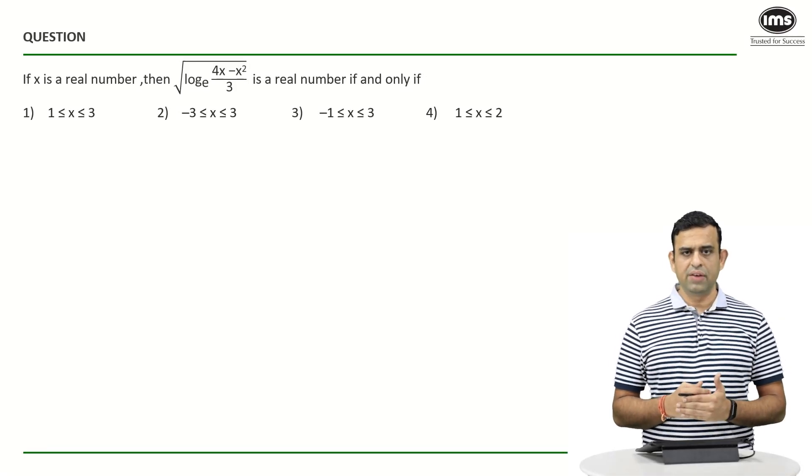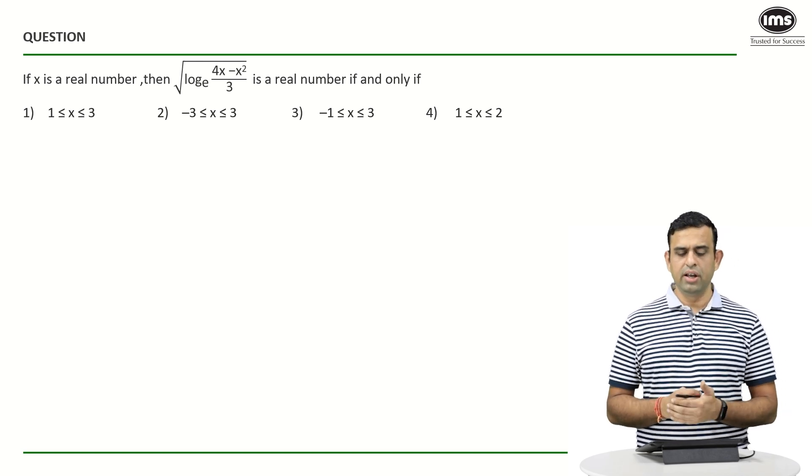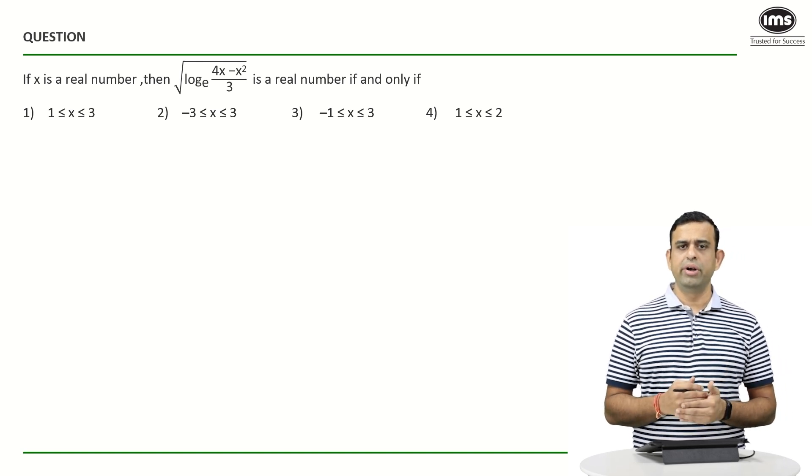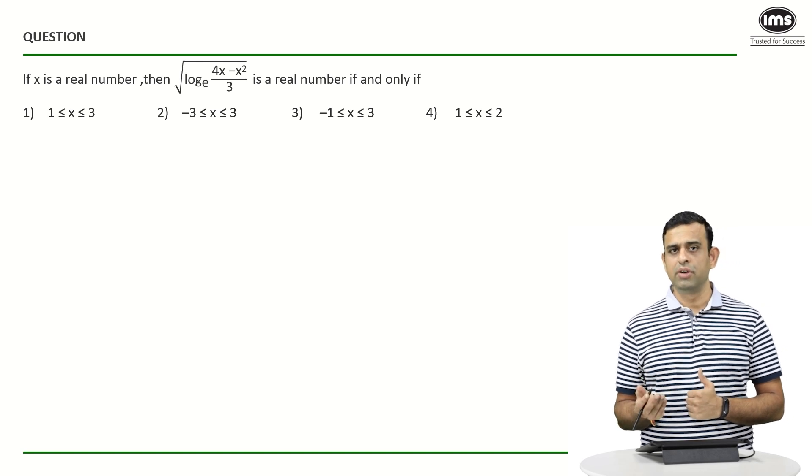In today's question, x is a real number and we're given the square root of logarithm of (4x - x²)/3 to the base e is a real number if and only if. We know that for the function to be defined, the term inside the square root needs to be a positive number or equals to 0; it can't be a negative quantity.